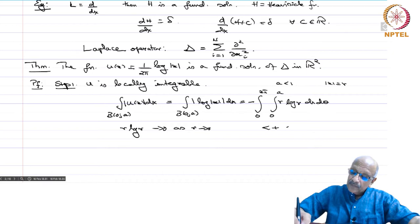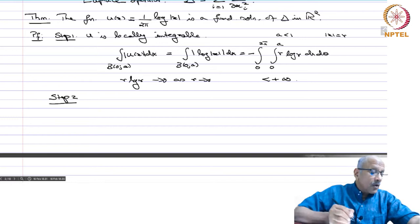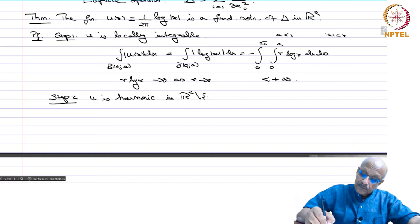This integral is finite, so u defines a locally integrable function and therefore defines a distribution. Step 2: The function u is harmonic in ℝ² \ {0}, meaning Δu = 0 there.